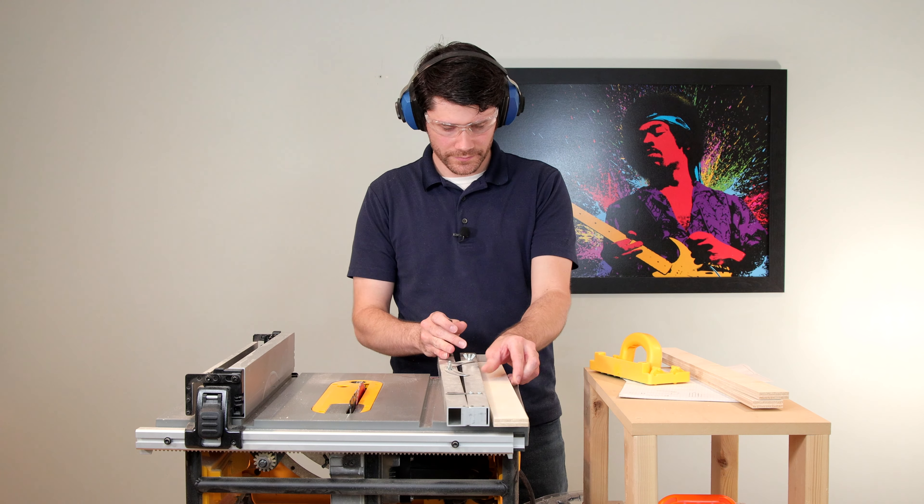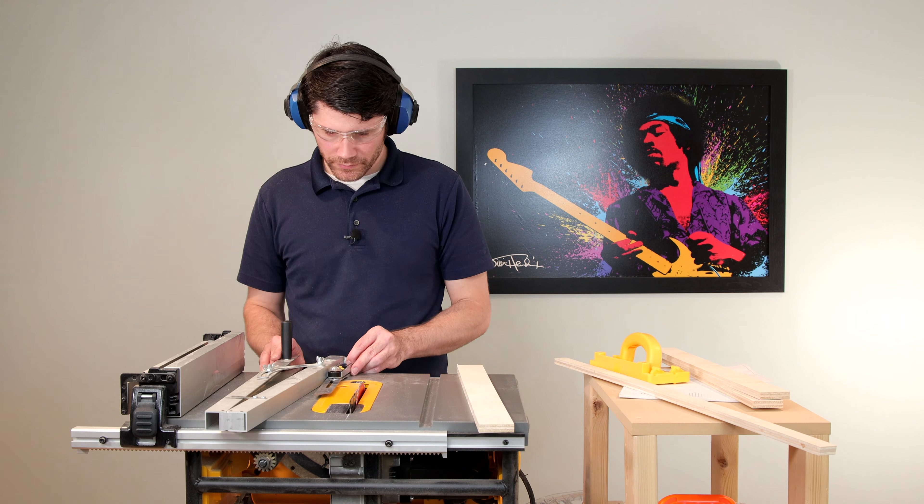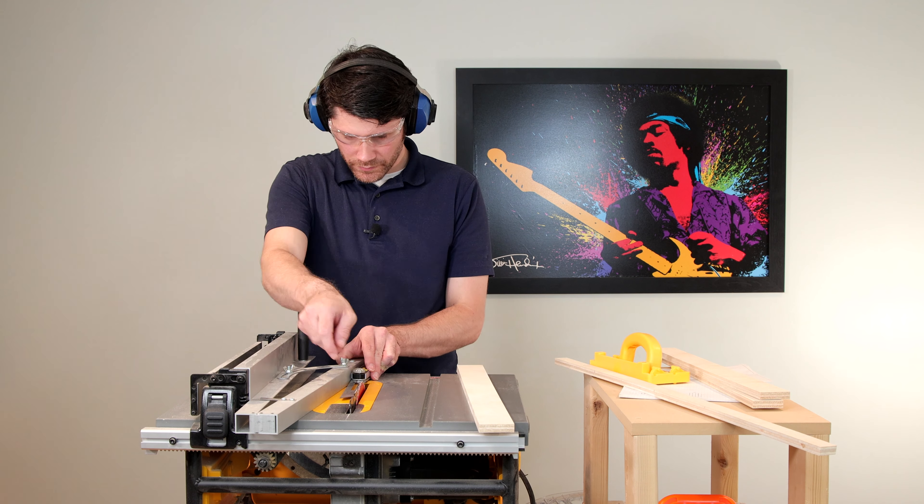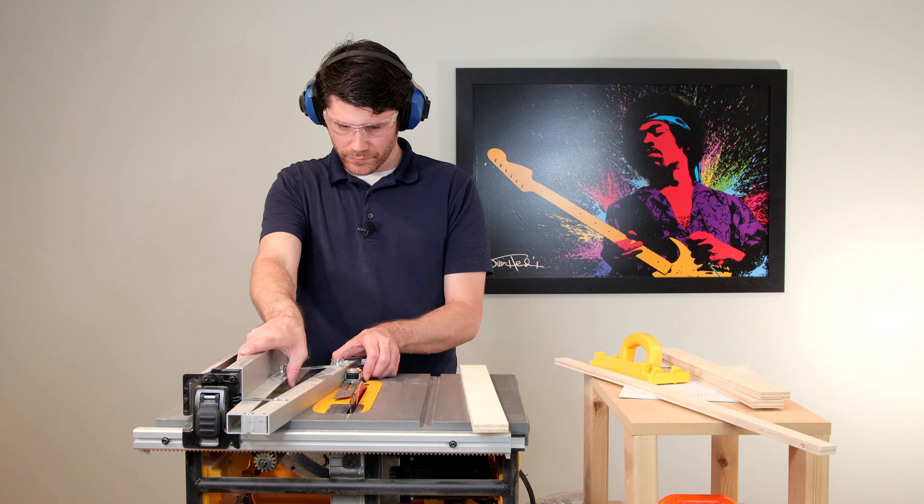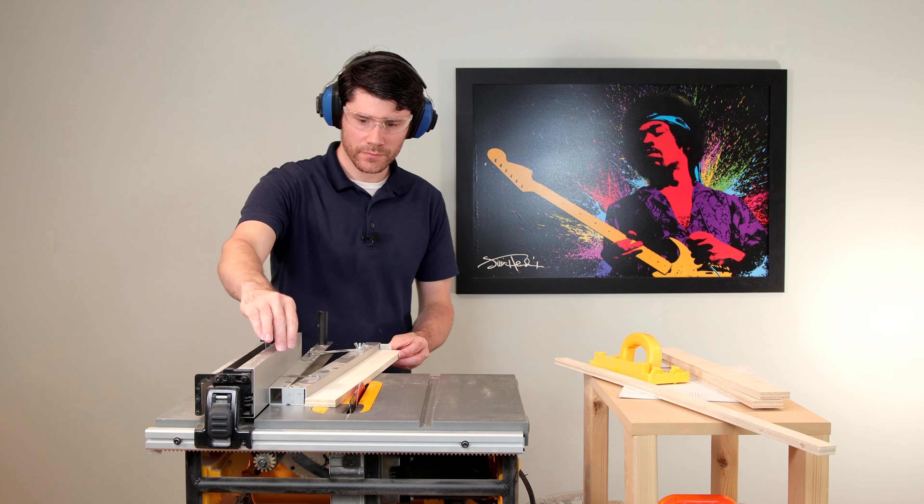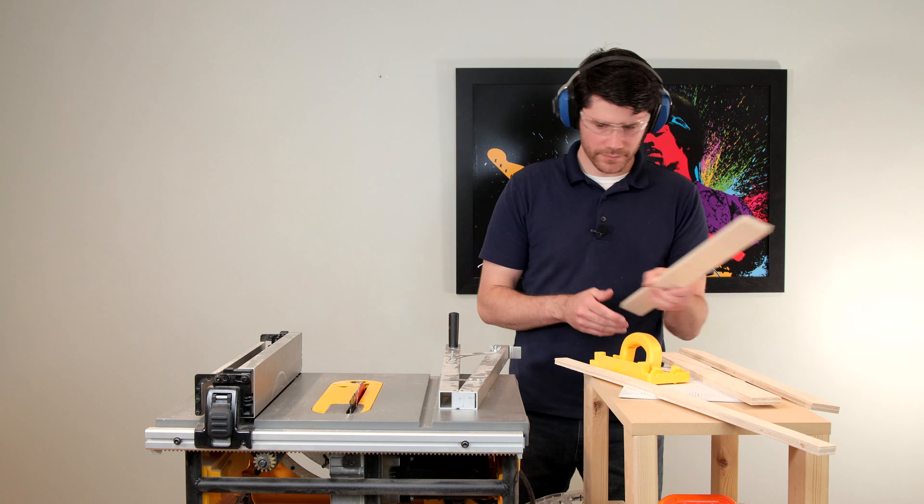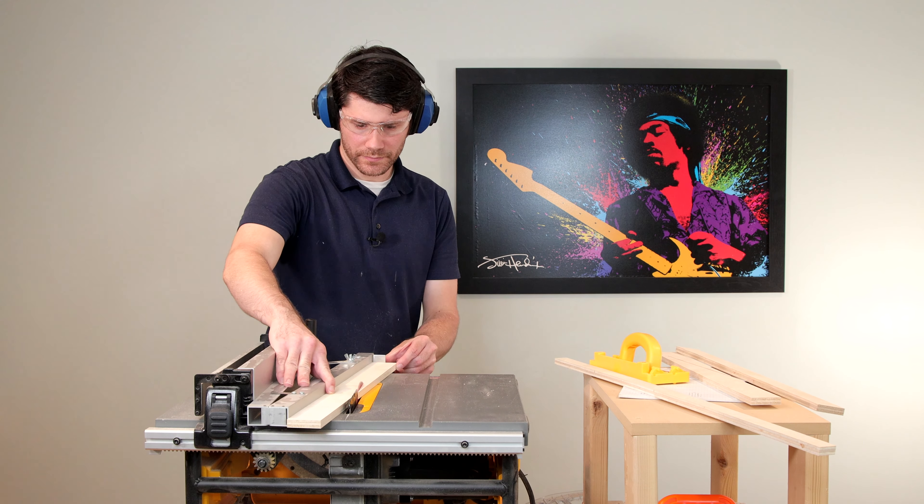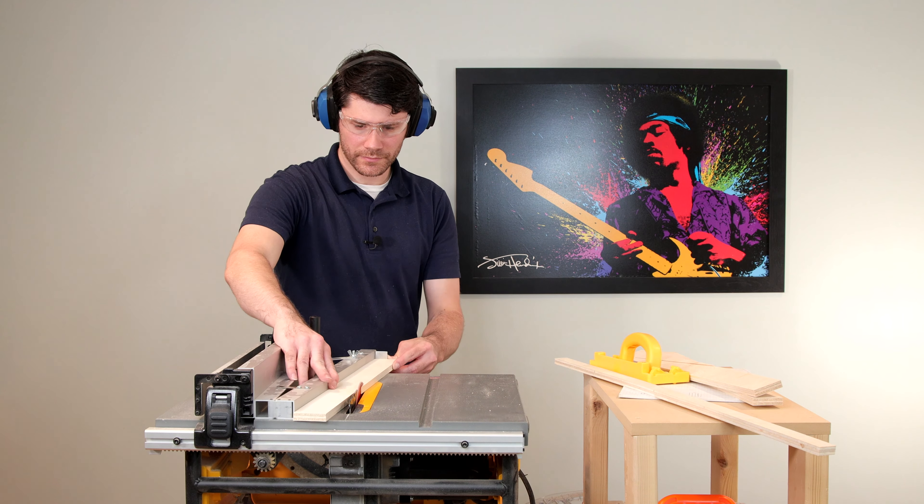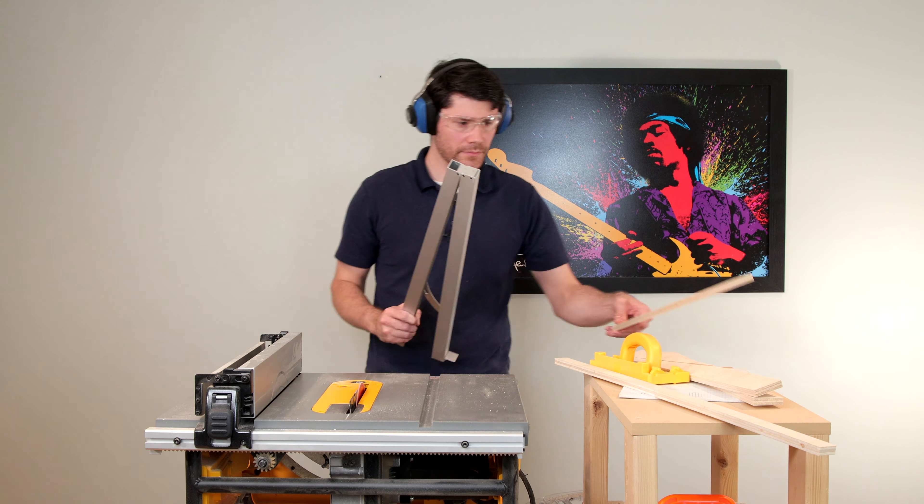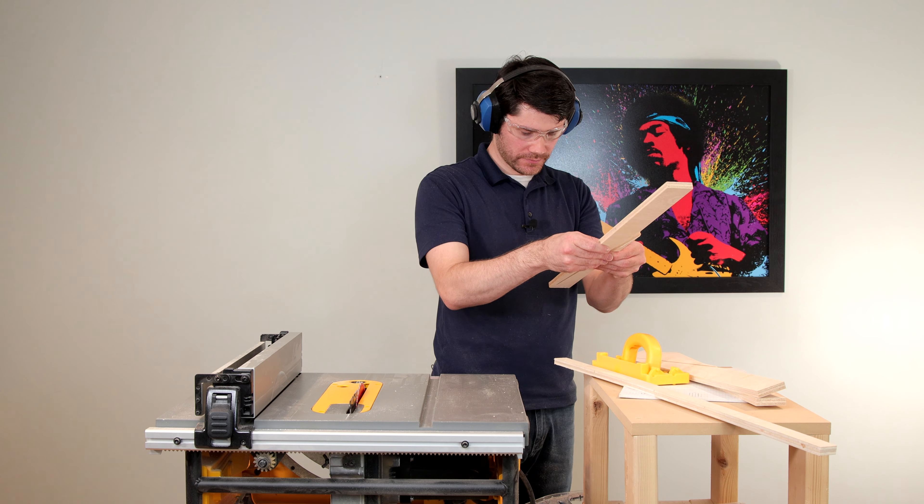Now I'm getting my taper jig out and setting the angle to seven degrees. We're going to taper the support feet from two inches down to about one eighth of an inch. There's a push block at the back of this jig so I cannot cut all the way through on the table saw. Instead, I'm making partial cuts ensuring not to impact the jig with the table saw blade.